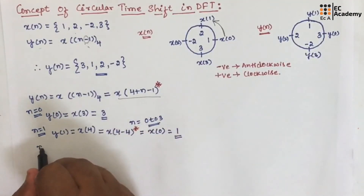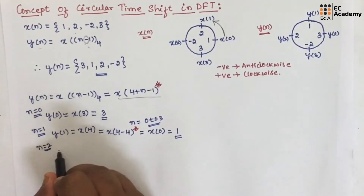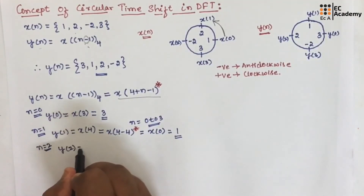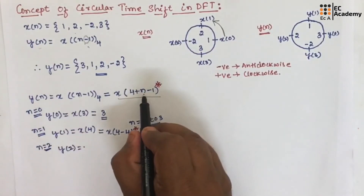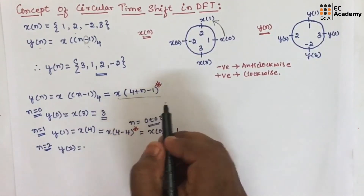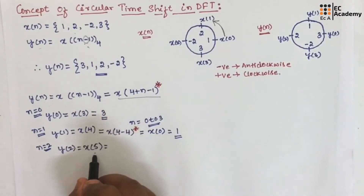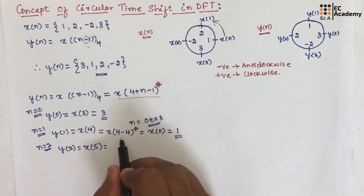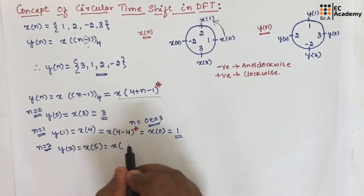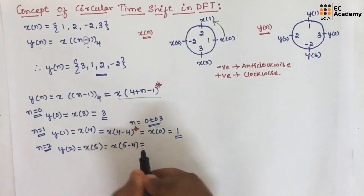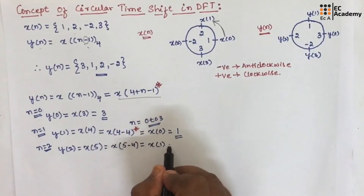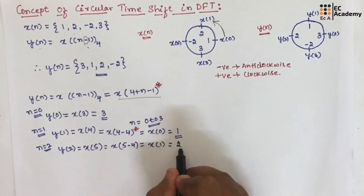If we put n equal to 2, y of 2 is equal to x of 4 plus 2 minus 1, which is x of 5. Since 5 is exceeding the range of n, we subtract the length of the sequence: 5 minus 4 gives x of 1. x of 1 is 2, so y of 2 is 2.